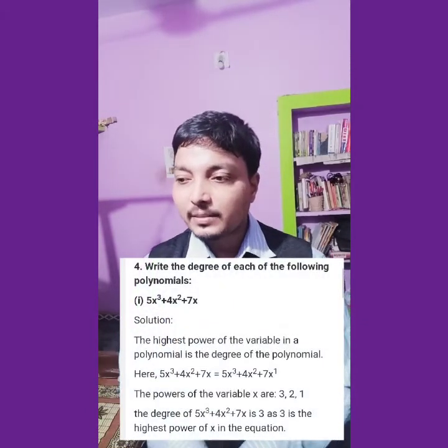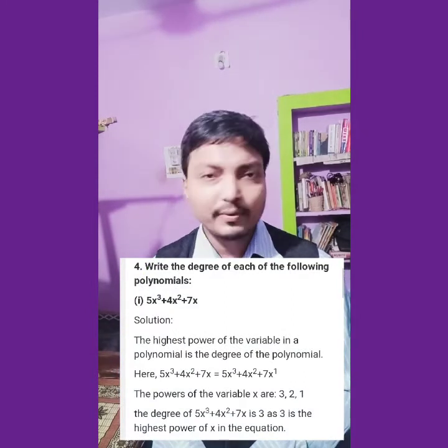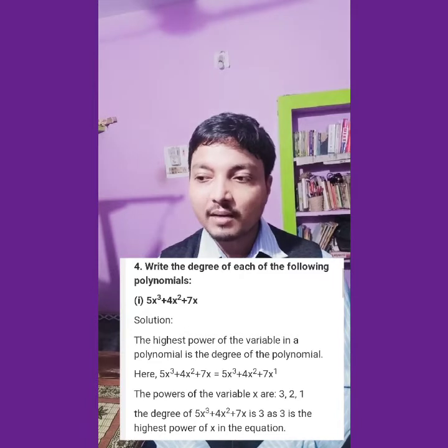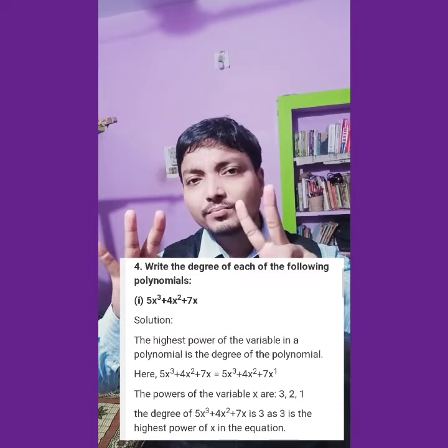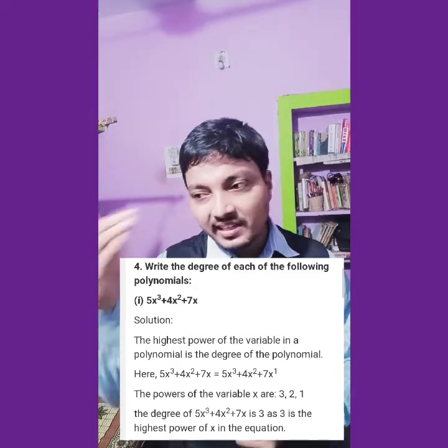Now question number 4: a few polynomials are given and you have to find the degree of each one. The degree is the highest power of the variable. The first one is 5x cube minus 4x square plus 7. It has three terms: powers are 3, 2, and 0. The greatest among 3, 2, and 0 is 3, so the degree of this polynomial is 3.